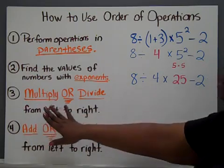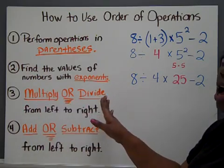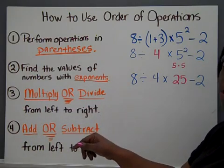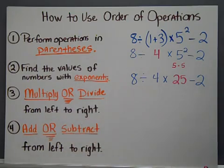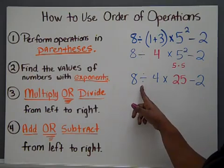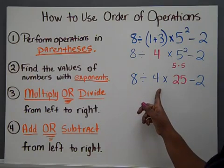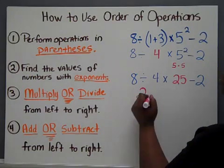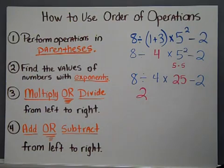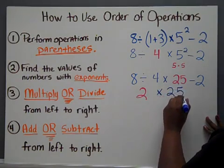Which leads us to step 3. Multiply or divide whichever one comes first in the numerical expression from left to right. So, when you read this numerical expression, you will see that division comes before the multiplication. And since division comes first, this will be the operation we do first, causing me to copy the rest of this numerical expression.